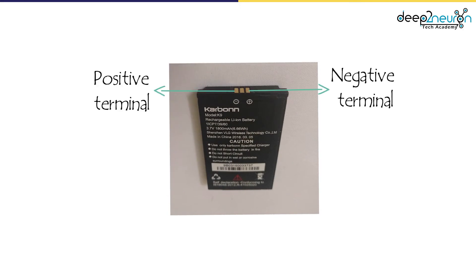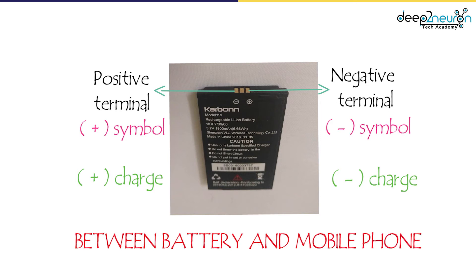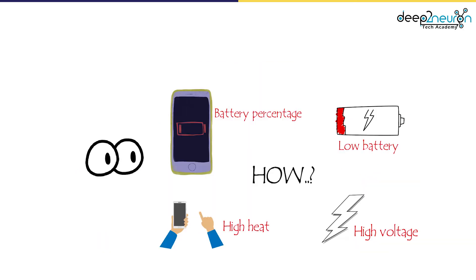Let's see the clear explanation of each terminal. One is the positive terminal and another is the negative terminal. The positive terminal is denoted by the plus symbol, and the negative terminal is denoted by the minus symbol. These two terminals provide the positive charge and negative charge between the battery and the mobile.